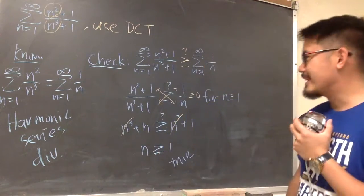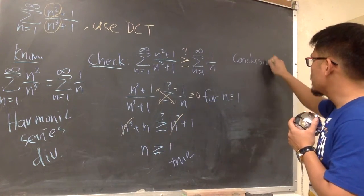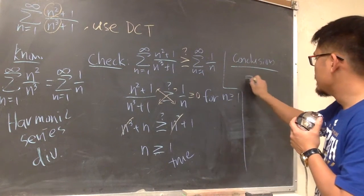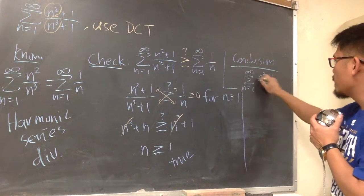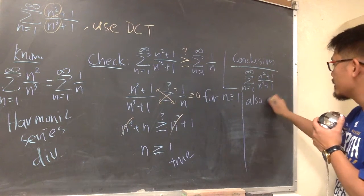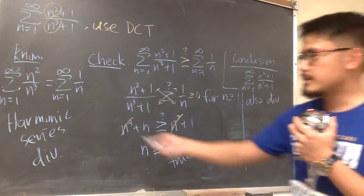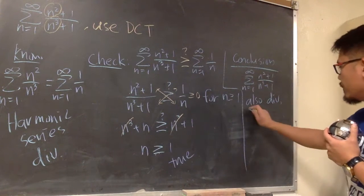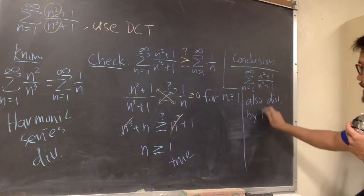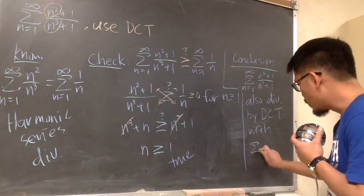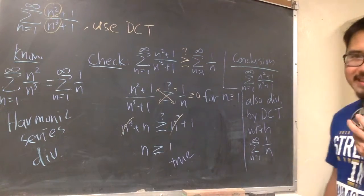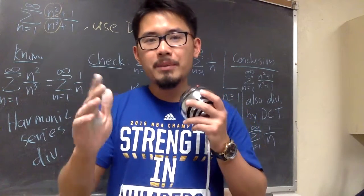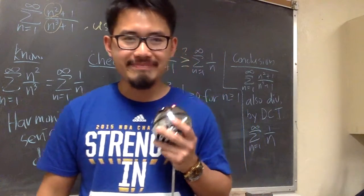Because this is a true inequality, we can draw a conclusion. Sigma when n goes from 1 to infinity of n squared plus 1 over n to the third power plus 1 also diverges — because they have the same conclusion: this one diverges, and this one is bigger than that, so it diverges as well. By the direct comparison test with sigma when n goes from 1 to infinity of 1 over n. So I've shown you both the limit comparison test and the direct comparison test — comment below and let me know which one you like better!